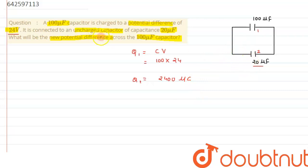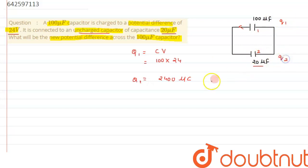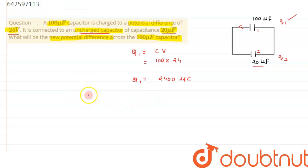In the second scenario, the uncharged capacitor of 20 microfarad is connected to the 100 microfarad capacitor. Charge will start transferring from capacitor one to capacitor two. Let the charge on capacitor one be Q1 and on capacitor two be Q2. The charge accumulation will stop when the potential difference across both capacitors becomes equal.